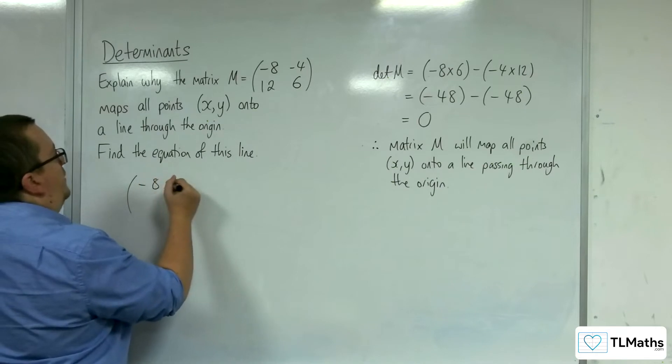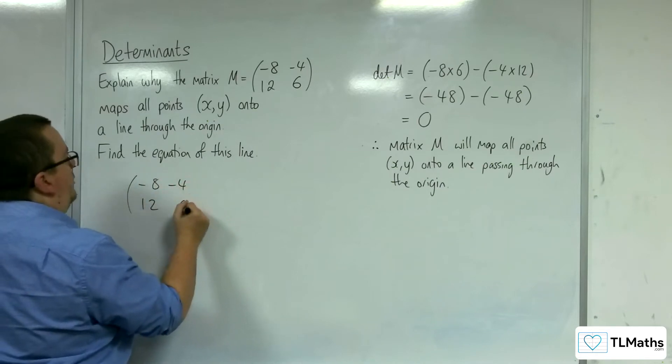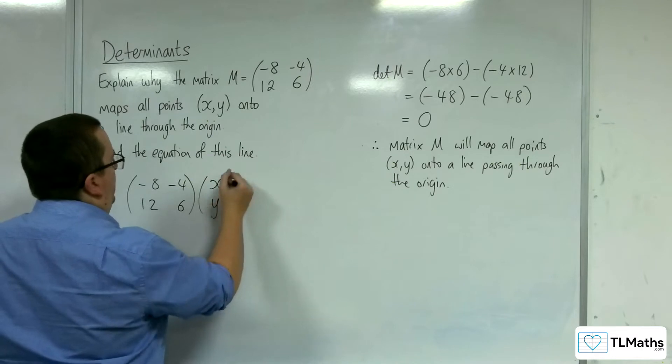So, you'd want to apply minus 8, minus 4, 12, 6, the matrix M, to a general pair of coordinates x, y.